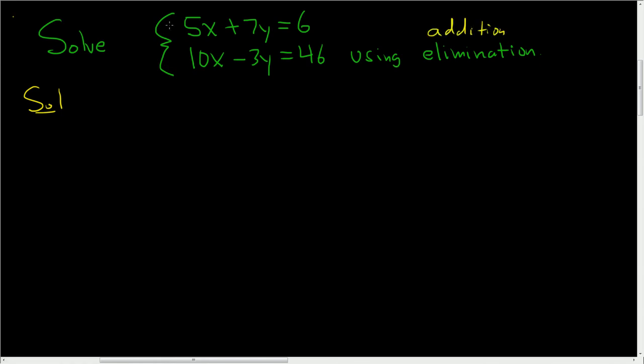So in this case, the question is, what can we multiply this equation by so that when we add it to this equation, the 10x goes away? Well, if we multiply 5x by negative 2, when we add it to 10x, it will go away because negative 2 times 5x is negative 10x.